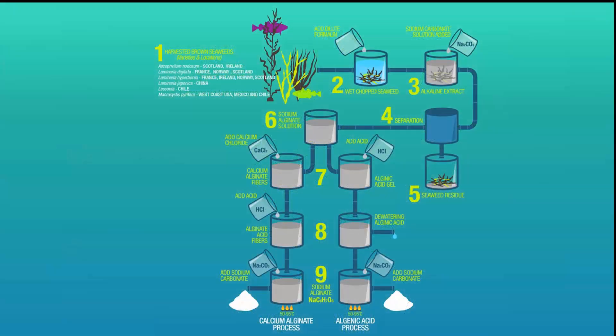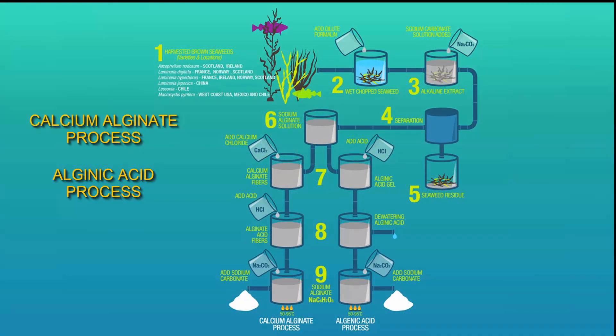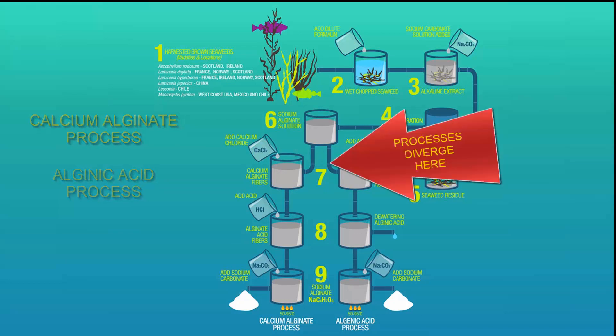Alginate is refined using two methods: the calcium alginate process and the alginic acid process. The processes are identical through the first six steps, but then diverge in the last three of the refining steps.